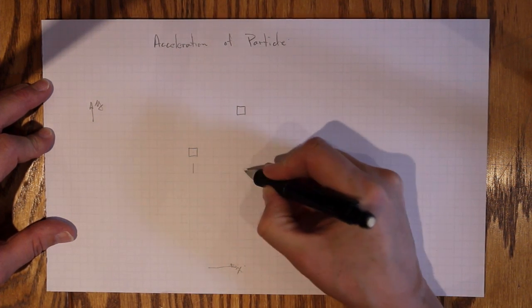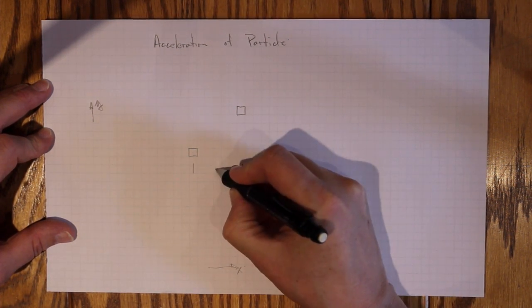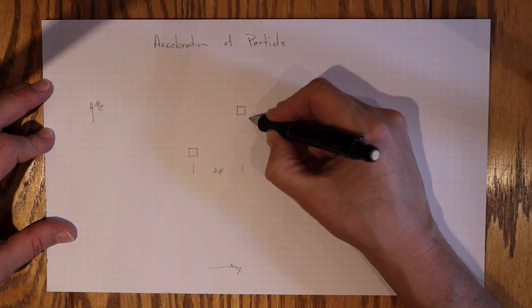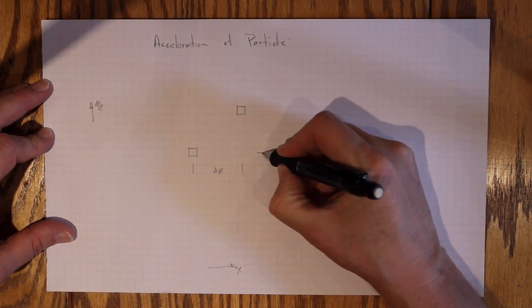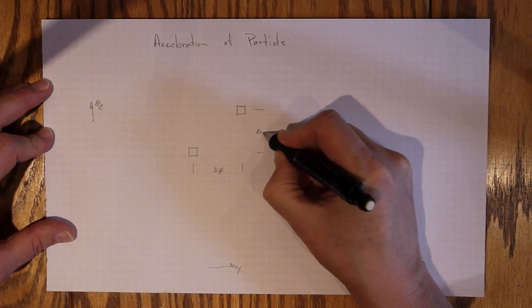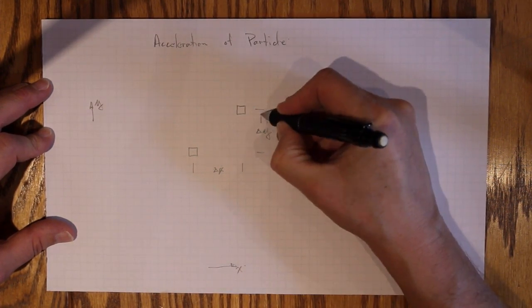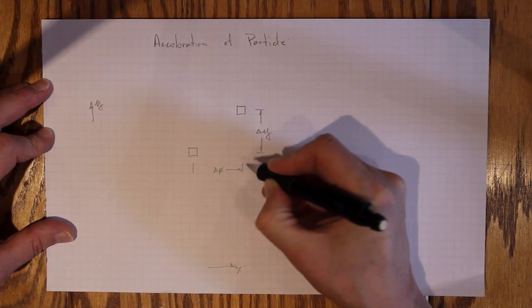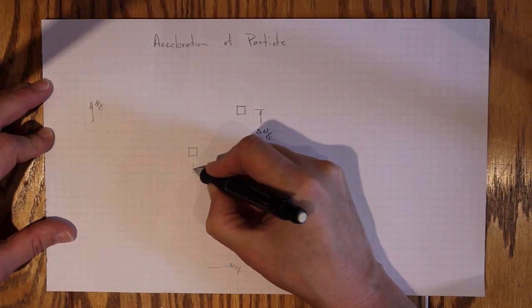then it's going to travel through a distance delta x, and it's going to also travel through a distance delta y. And both of those motions are going to need to be accounted for in keeping track of its velocity.